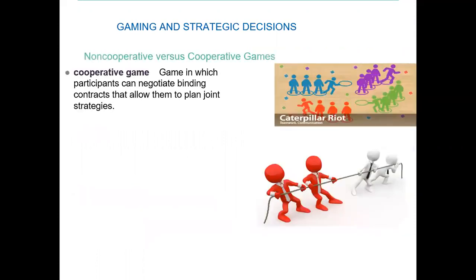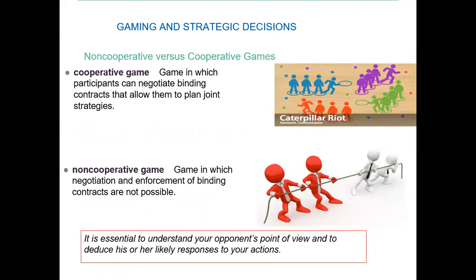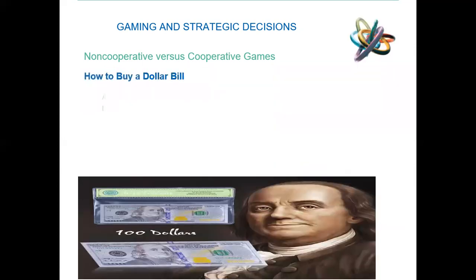Basically we have cooperative games or non-cooperative games. In cooperative games, players work in circles and groups — they can negotiate, bid together, and set actions together. In non-cooperative games, negotiation and enforcement of binding agreements are impossible. Players are opponents against each other, so it is essential to understand your opponent — are they going to play with you or fight against you?